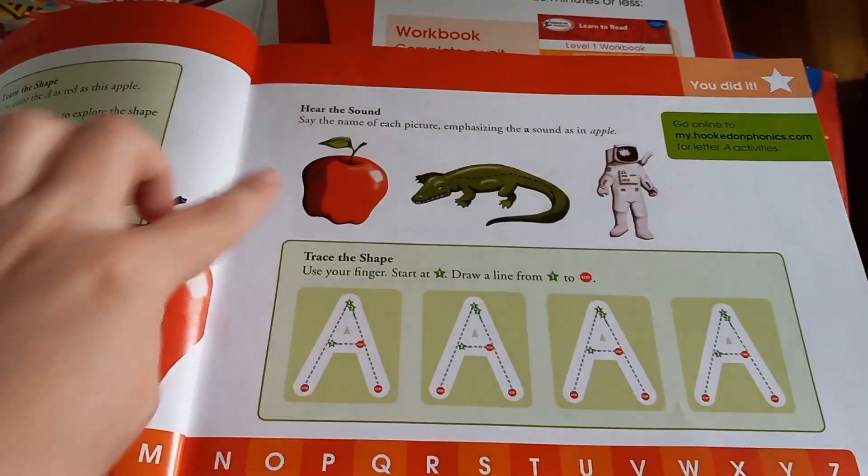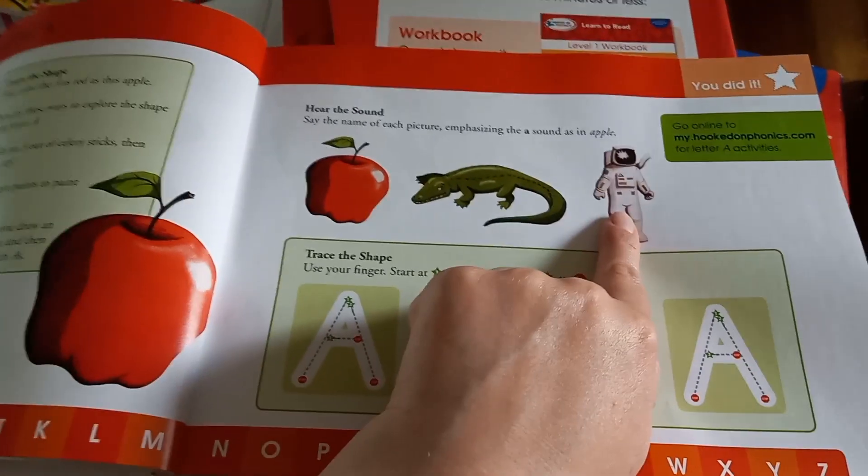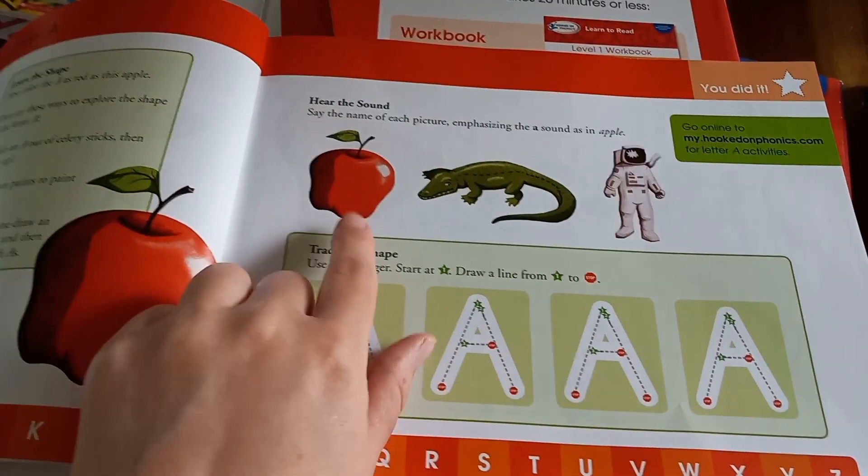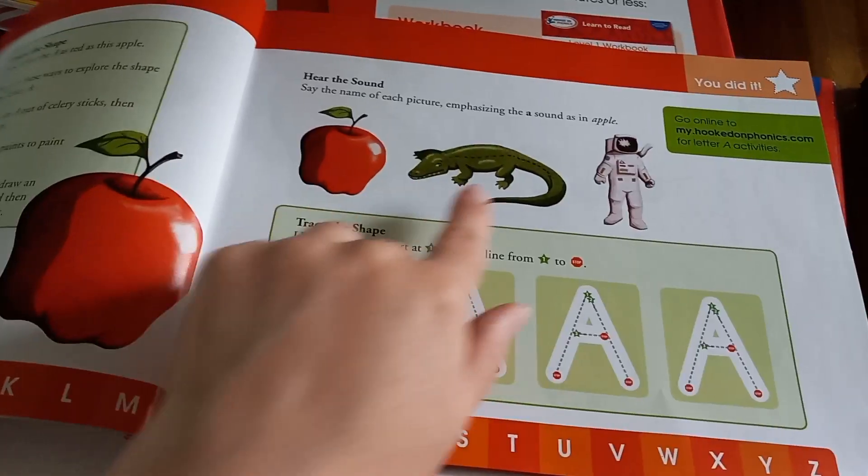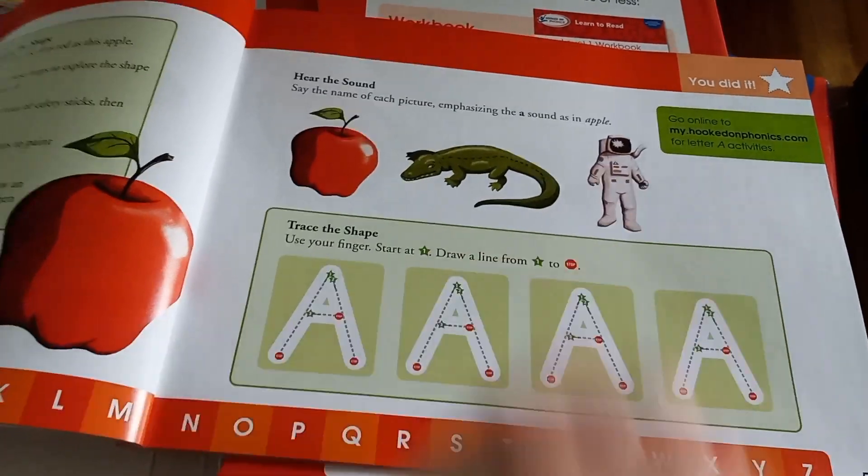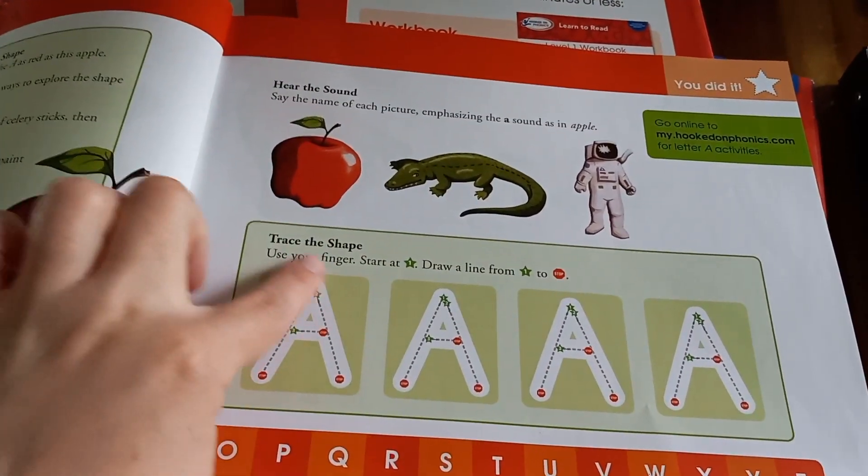Then it gives you a couple ways to explore the letter A. What I have my child do is I have them trace it with their finger and then fill it in with the manipulatives. And then you say the name of the pictures. So A, like apple, alligator, astronaut.